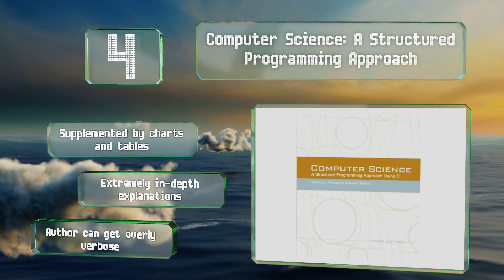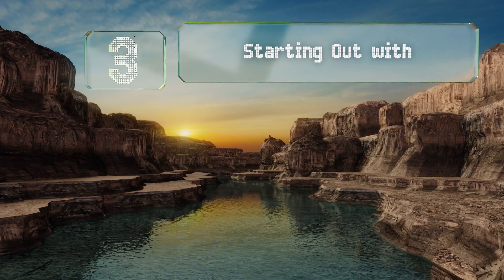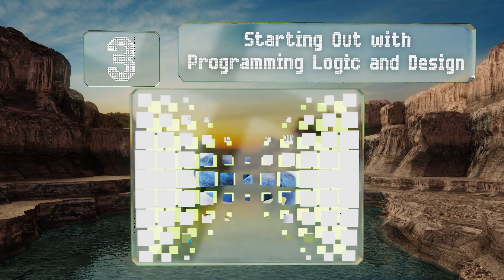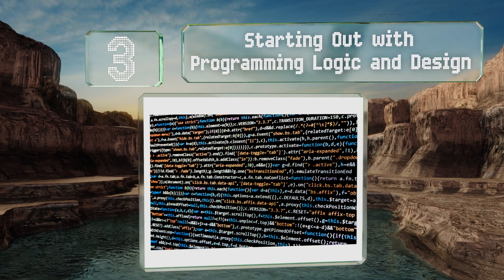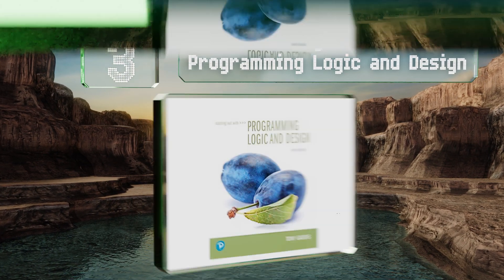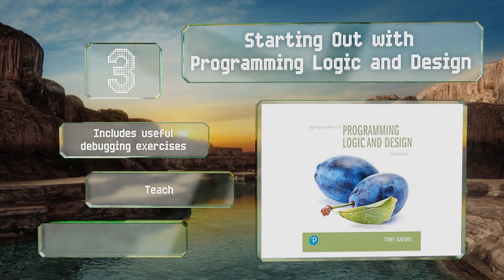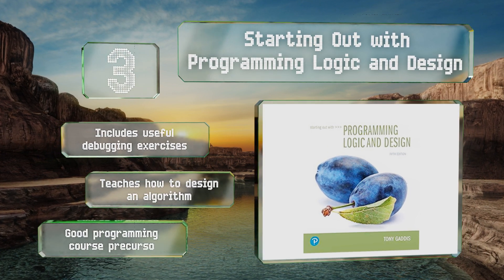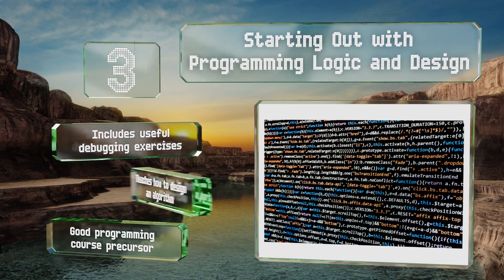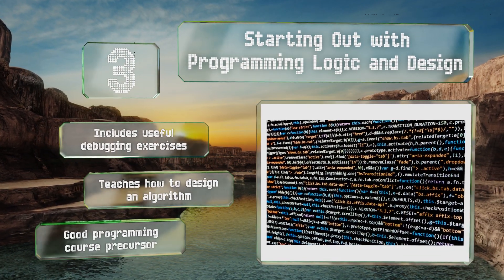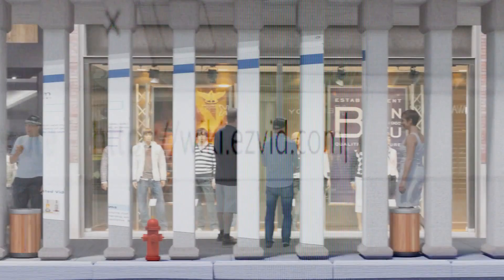However, the author can get overly verbose. Nearing the top of our list at number three, Starting Out with Programming Logic and Design is a language-independent text that doesn't bog readers down with too much complicated syntax, but rather explains things in plain English. It contains many illustrative code snippets, flowcharts, and examples, includes useful debugging exercises, teaches you how to design an algorithm, and is a good programming course precursor.